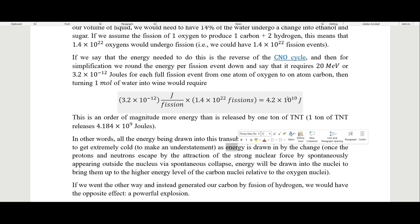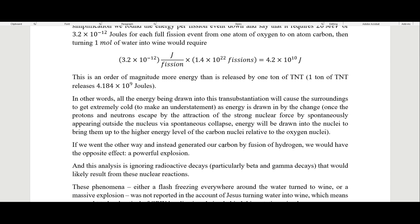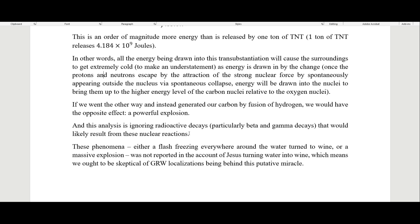Once the protons and neutrons escape the attraction of the strong nuclear force by spontaneously appearing outside the nucleus via spontaneous collapse, energy will be drawn into the nuclei to bring them up to the higher energy level of the carbon nuclei relative to the oxygen nuclei. If we went the other way and instead generated our carbon by fusion of hydrogen, we would have the opposite effect, a powerful explosion. These phenomena, either a flash freezing everywhere around the water turned into wine, or a massive explosion, were not reported in the account of Jesus turning water into wine, which means we ought to be skeptical of the GRW localizations being behind this putative miracle.